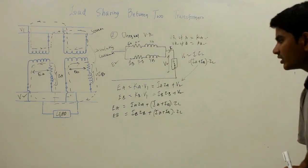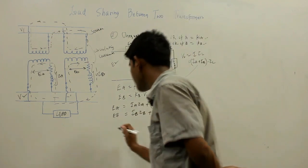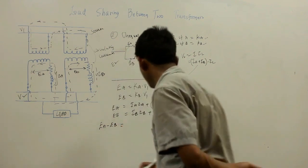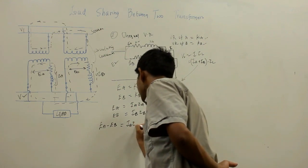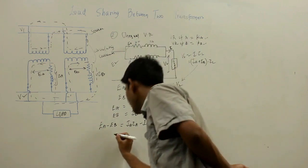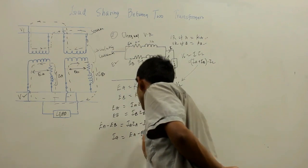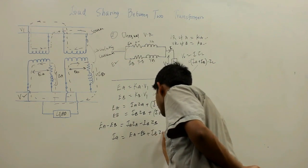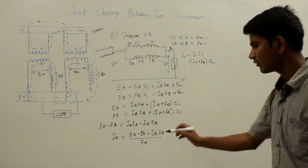Subtracting EB from EA, the (IA + IB)·ZL terms cancel, giving: EA − EB = IA·ZA − IB·ZB. From this, IA = (EA − EB + IB·ZB) / ZA. This is the expression for IA in terms of IB.